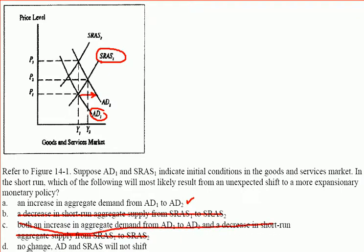Lastly, we are left with D — no change; AD and SRAS will not shift. But we've just indicated that an unexpected expansionary monetary policy will surely affect aggregate demand and favorably push it to the right.